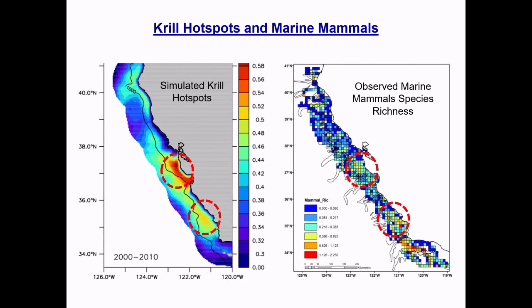Why do we care about krill hotspots? The obvious connection is to higher trophic levels. Humpback and blue whales feed directly on krill. Sea lions, while they don't feed on krill directly, feed on fish that feed on krill. Observed marine mammal species richness from multiple cruises shows enhanced sightings in the central California coast region north of Point Conception — the same regions where we predict krill hotspots. So if we can predict krill hotspots, we may be able to say something about the distribution of marine mammals without modeling all the trophic levels in between.